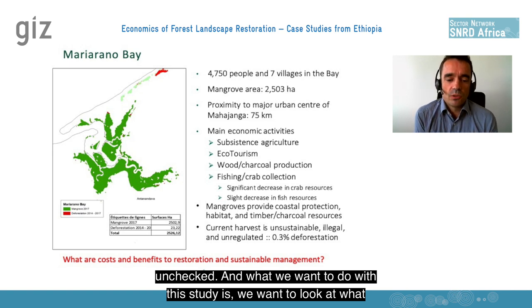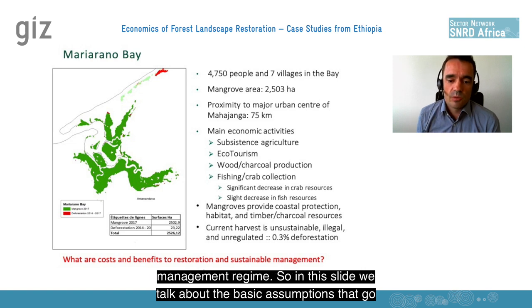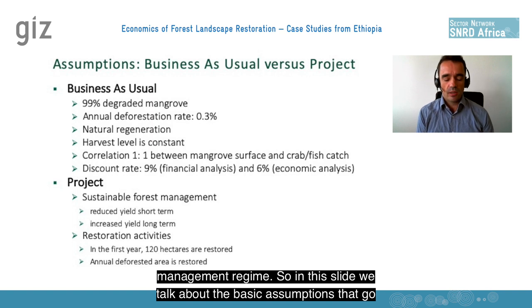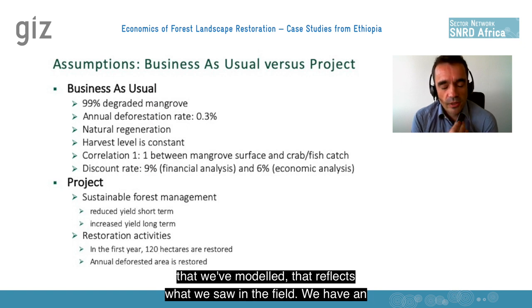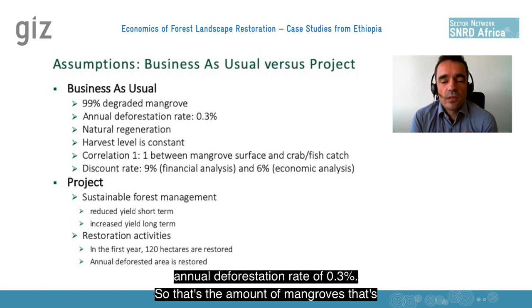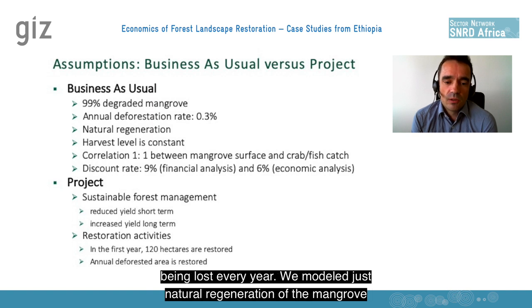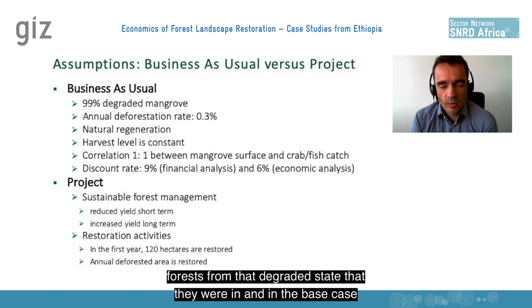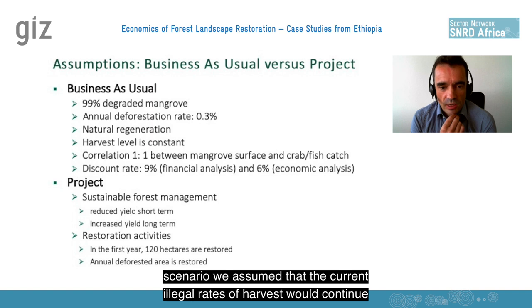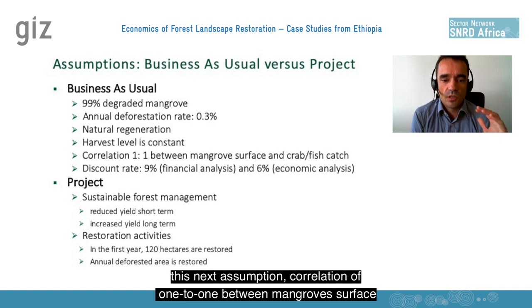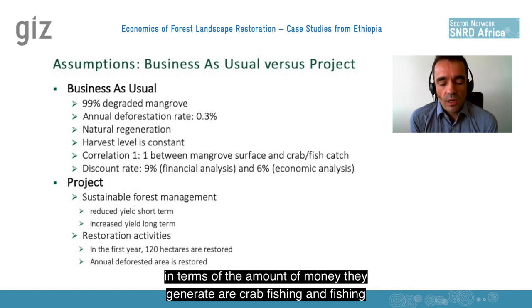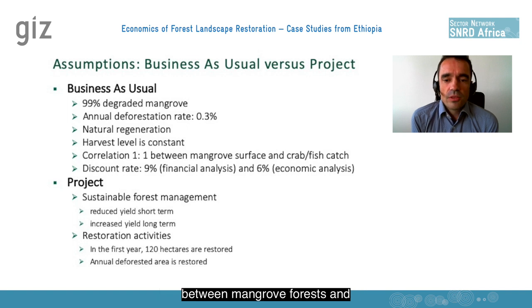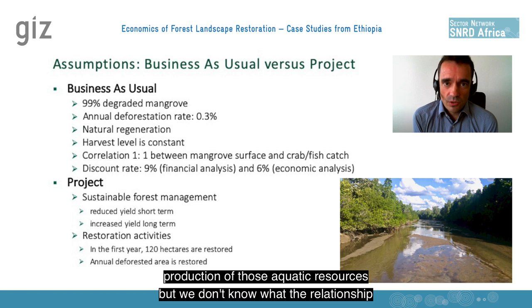What we want to do with this study is look at the costs and benefits of restoring the landscape and implementing a sustainable management regime. In the base case, we've modelled a level of mangrove degradation that reflects what we saw in the field. We have an annual deforestation rate of 0.3 percent — that's the amount of mangroves being lost every year. We modelled natural regeneration of the mangrove forests from that degraded state, and assumed that current illegal rates of harvest would continue. The two most important economic activities in terms of money generated are crab fishing and fishing, and we know there is a connection between mangrove forests and production of those aquatic resources.